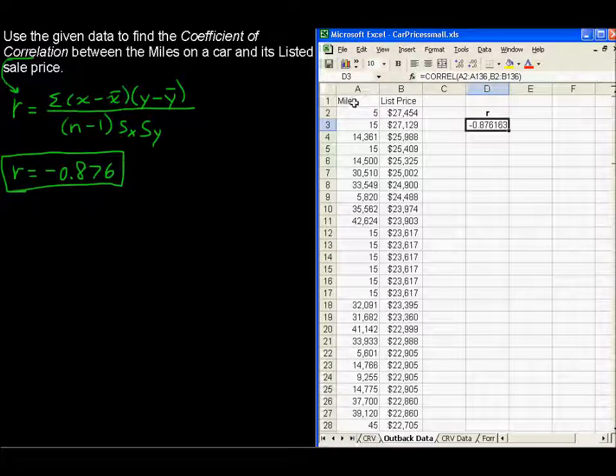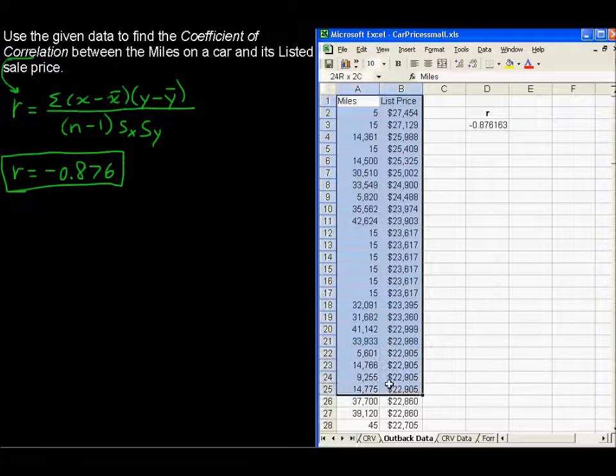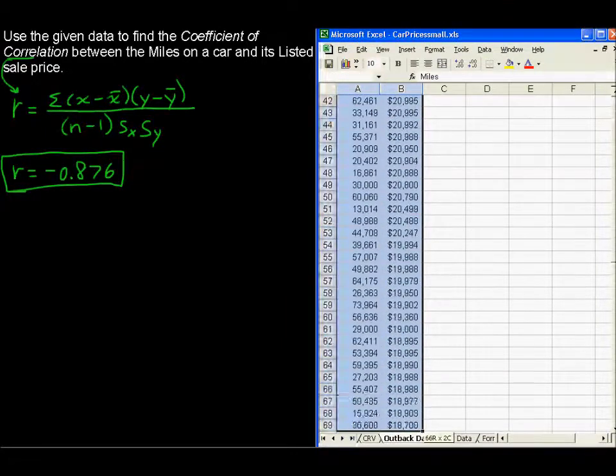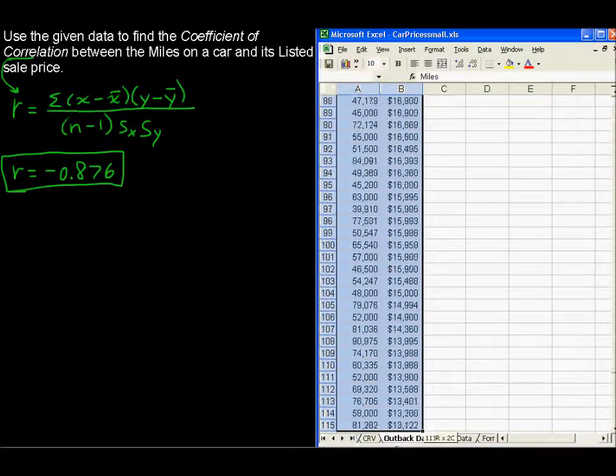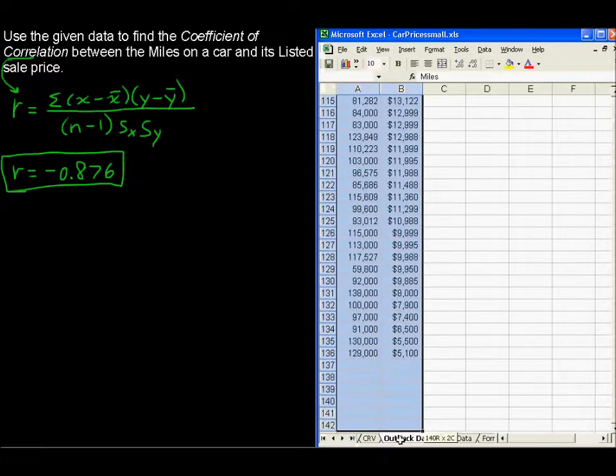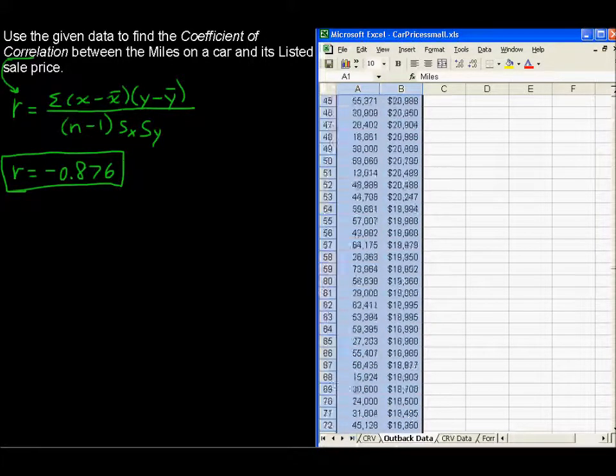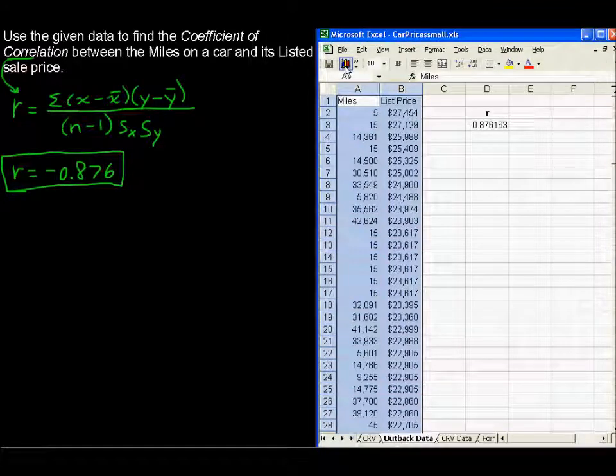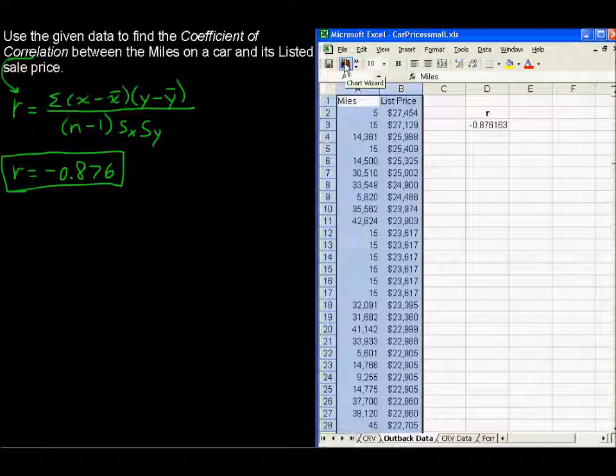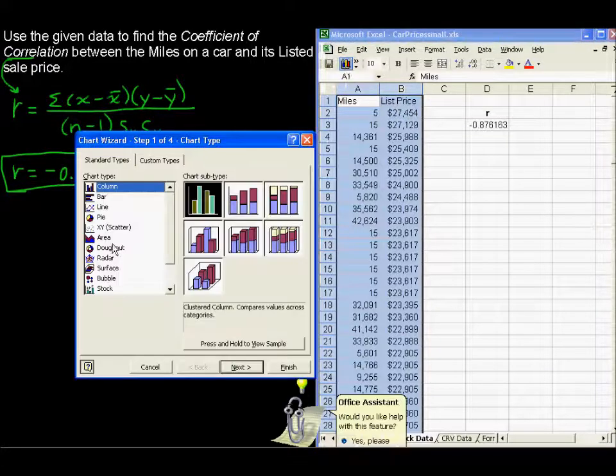So I'm going to actually pick the data first. Choose it all. I know I'm going down to 136. I did choose the labels this time. We've got it. And now I'm going to go to Chart Wizard. So if you see that button, it might look a little bit different for you if you've got a newer version of Excel. If you don't see it, you could of course just type in Chart Wizard into the help.